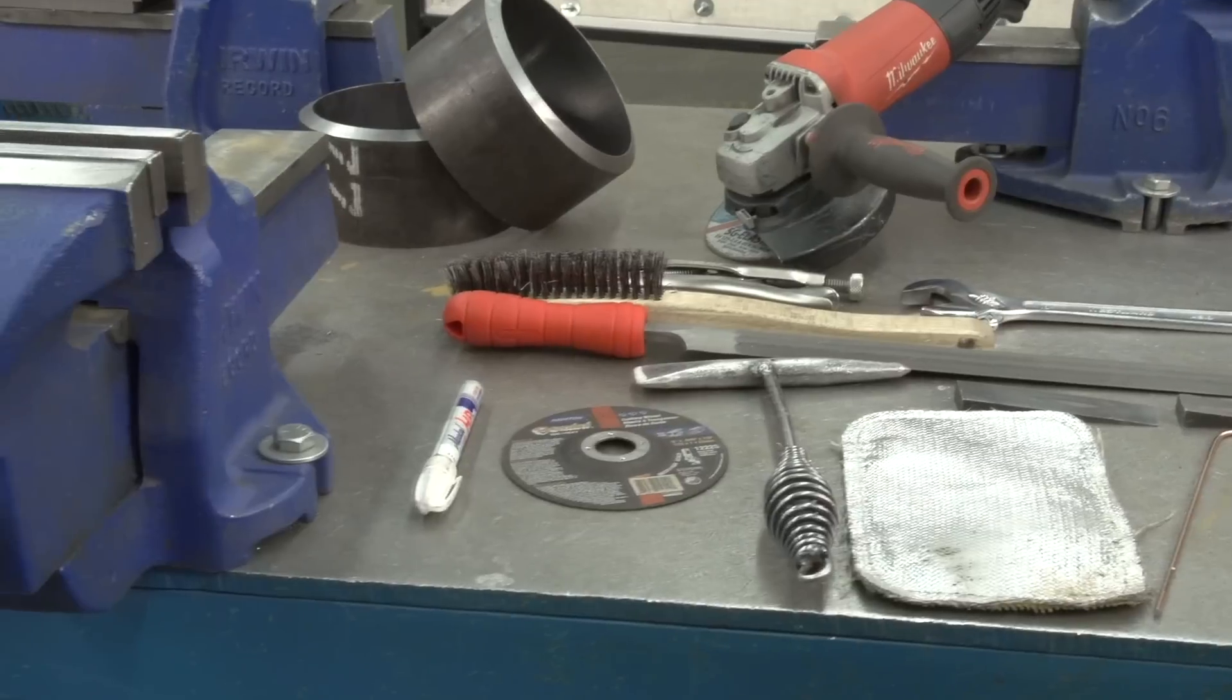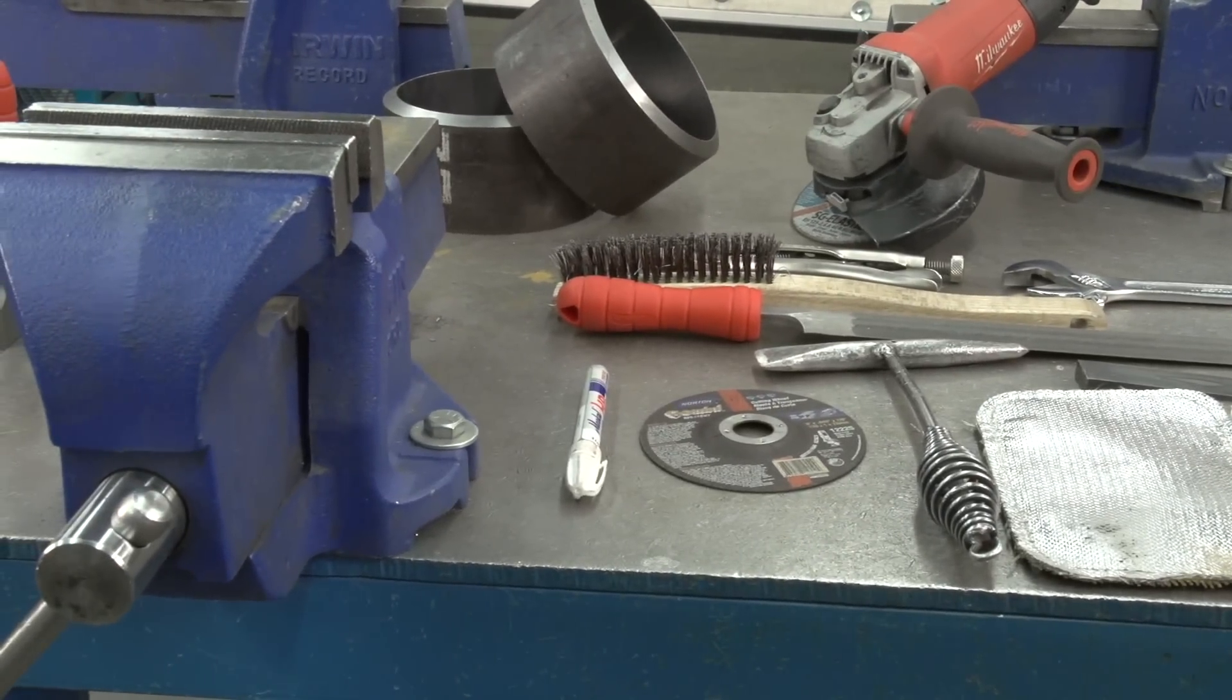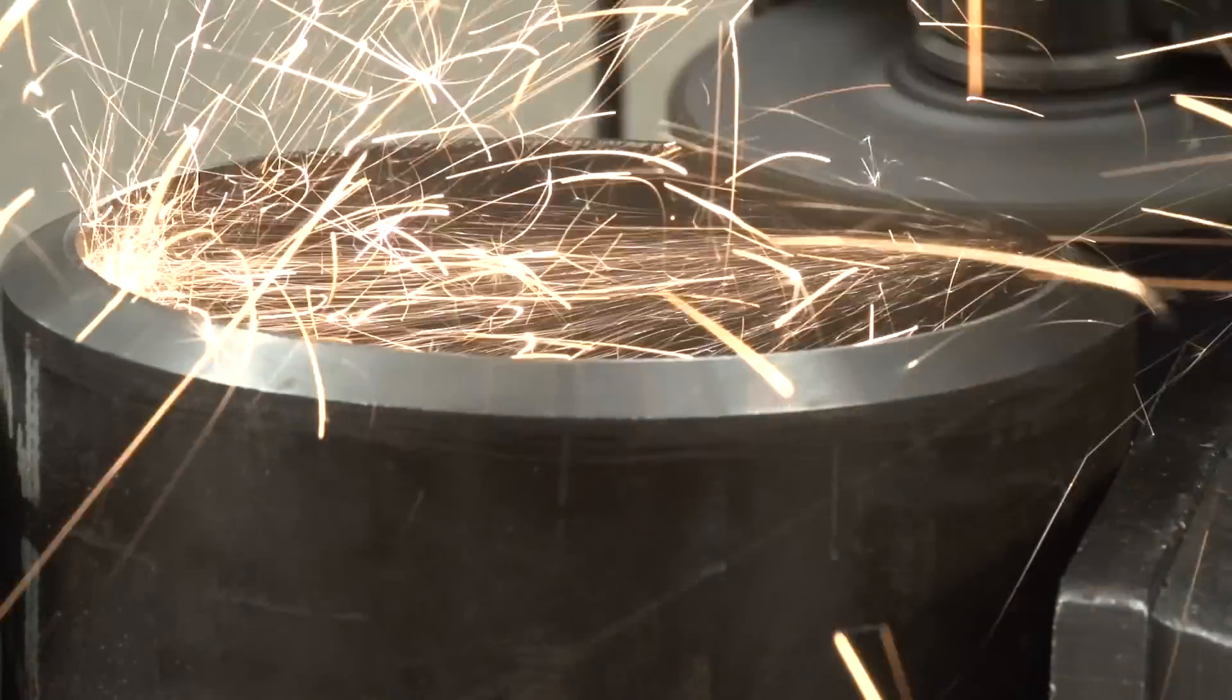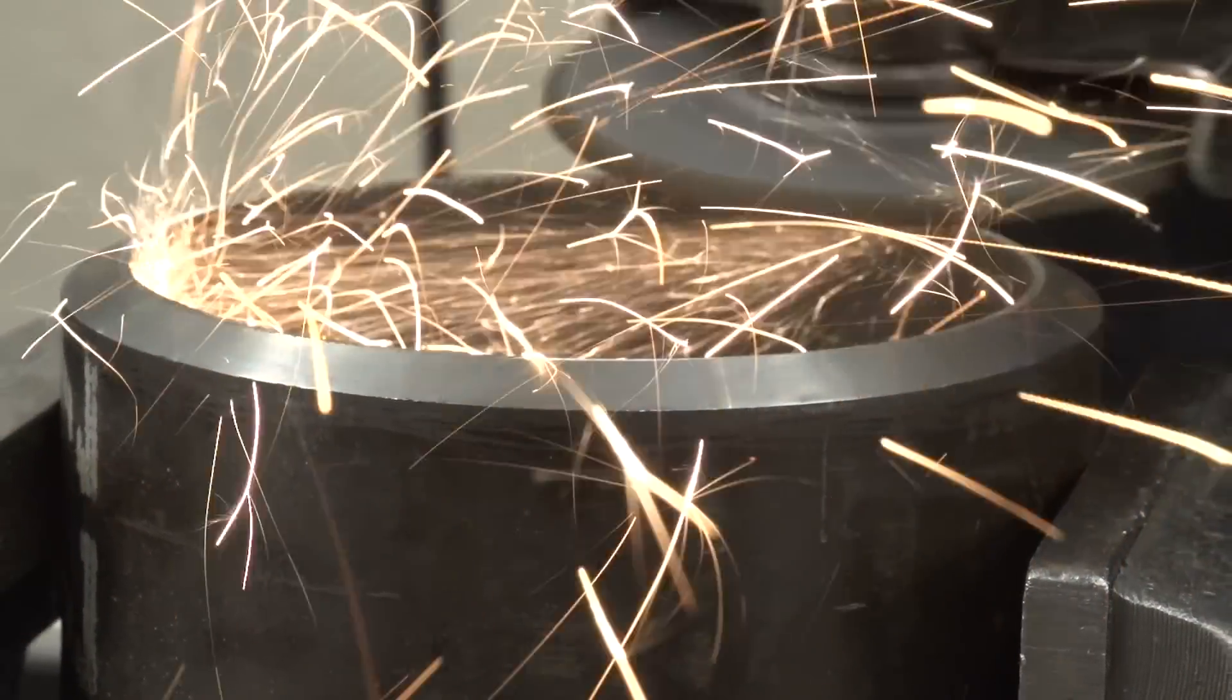The 30 to 37.5 degree bevel on each can be prepared by a machine or flame cut. Prepare 2.5 to 3.2 millimeters of the root face by grinding or filing.